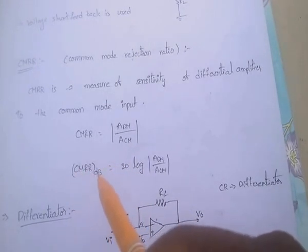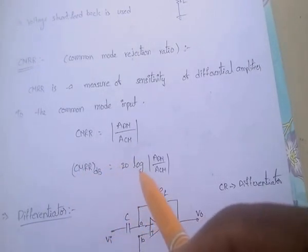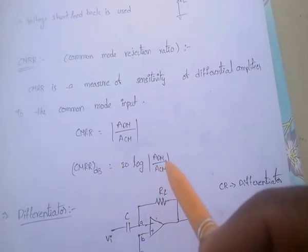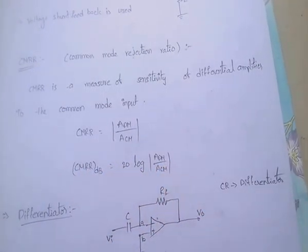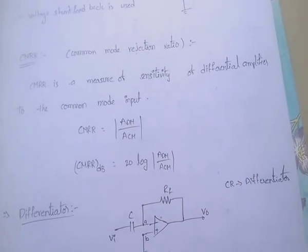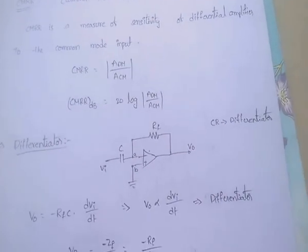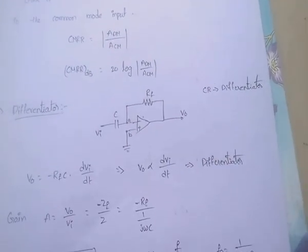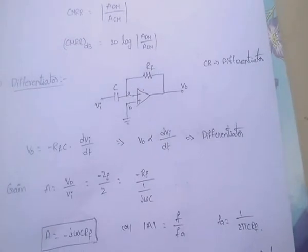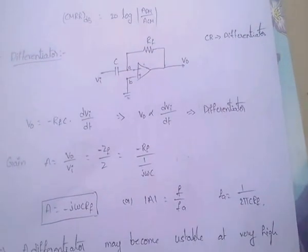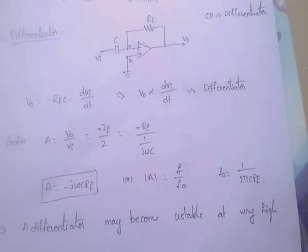CMRR in case of dB equals 20 log of ADM by ACM — very, very important formula. Coming next: differentiator — very, very important.